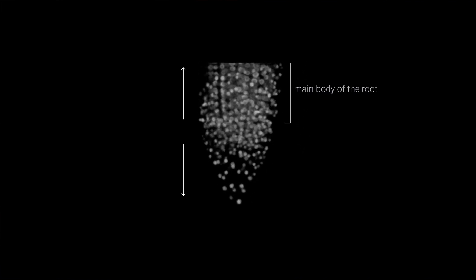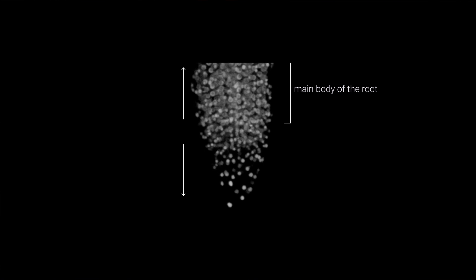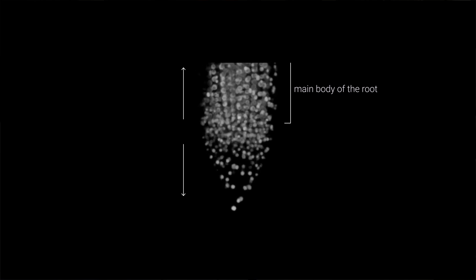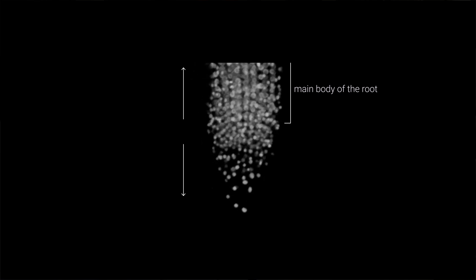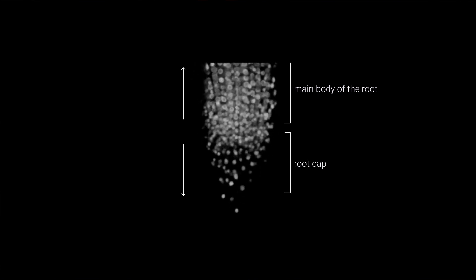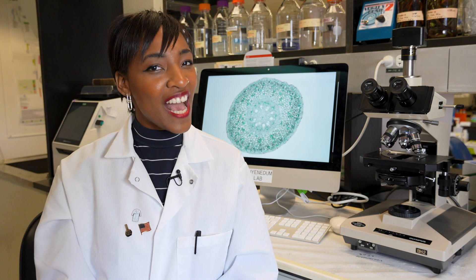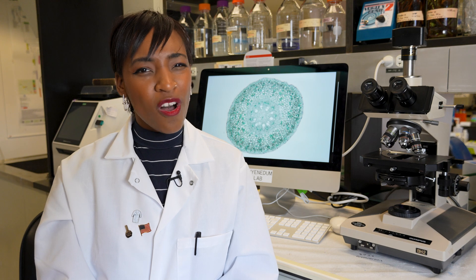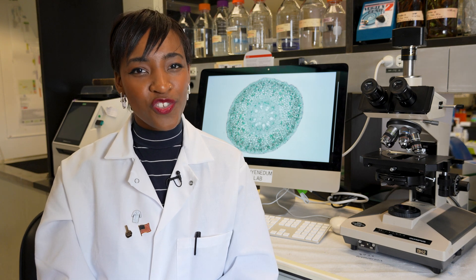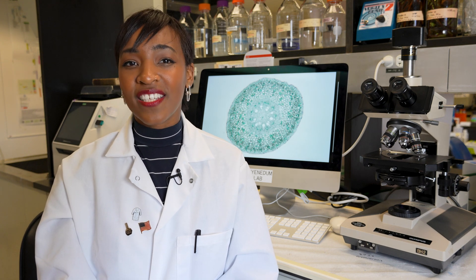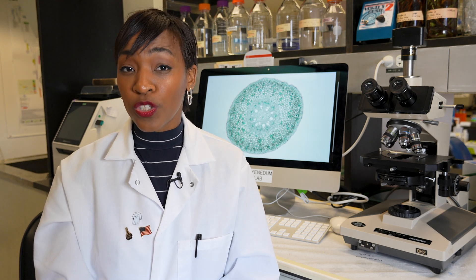Unlike the shoot, which we'll explore in our next episode, the RAM produces cells in both directions: towards the plant axis, forming the main body of the root, and away from the plant axis, forming the root cap. The root stele, or vascular tissue, also has a unique structure that can differ from most shoots.